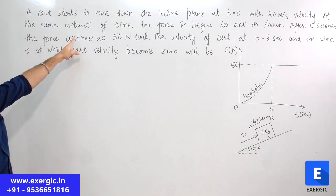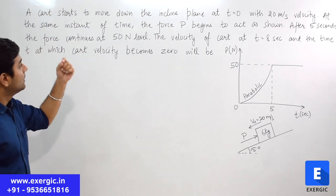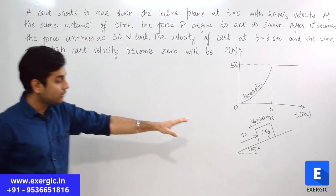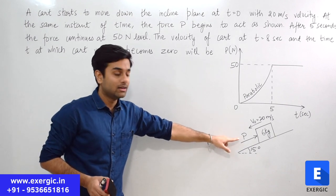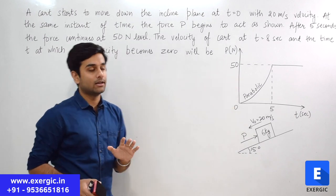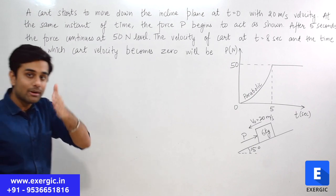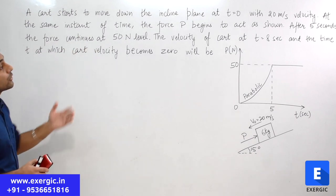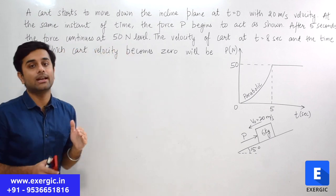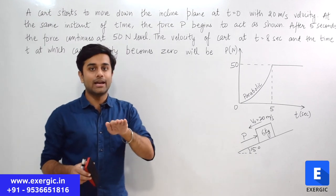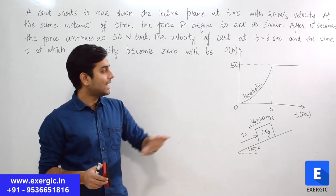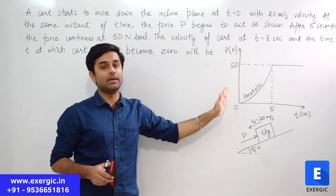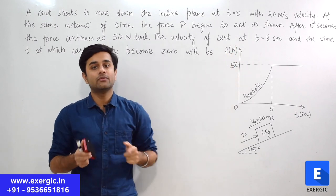At the same instant, means at t equal to 0 itself, the force P begins to act as shown. Refer to the diagram — you can see that there is a force P acting up the inclined plane. After 5 seconds, means from t equal to 0 to t equal to 5 seconds, the force continues at 50 Newton level. So this force P which is being applied is applied with some variation. This graph is also given to you showing the time and the value of force P in Newton.